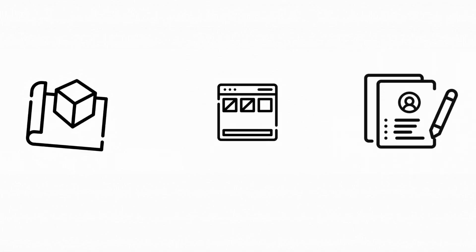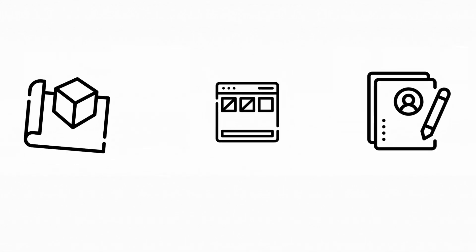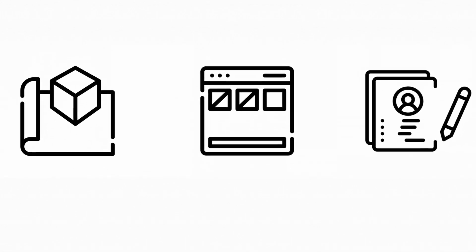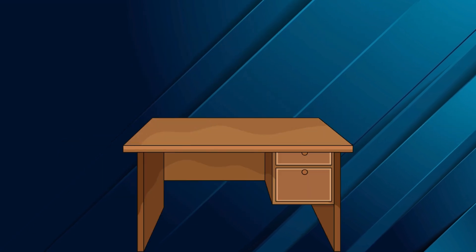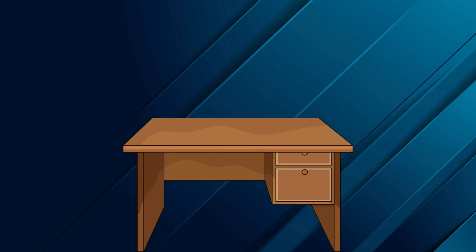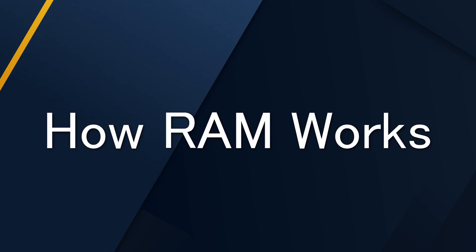Every time you open a program, load a browser, or edit a file, that data is temporarily moved into RAM for quick access. Because pulling data from your main storage drive is thousands of times slower — accessing RAM takes nanoseconds, while accessing an SSD takes microseconds. But once you turn that system off, that data disappears, just like clearing your desk at the end of the day. So now that we know what RAM is, how does it actually work on a technical level?